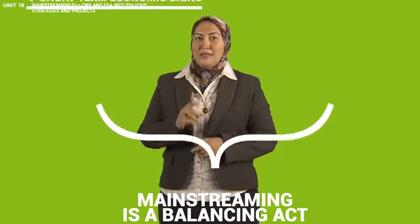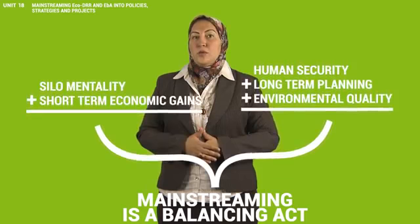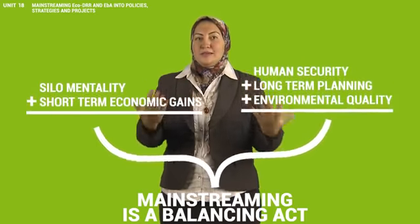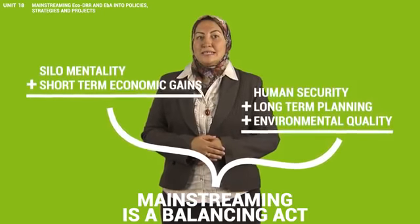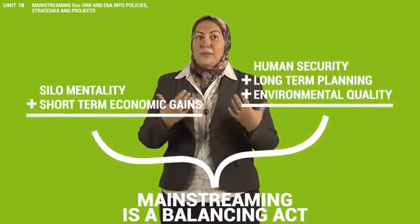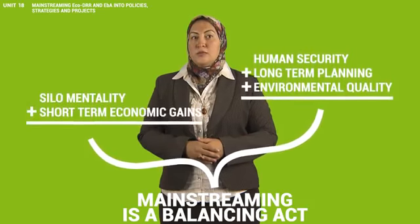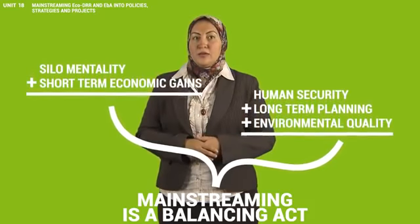To wrap up, mainstreaming ECODRR and EBA requires not only balancing between economic and environmental interests, but also between stakeholders' competing interests. These challenges are beyond the capacity of any group or institution to address single-handedly. Promoting effective participation by all stakeholders requires approaches that are multi-sectoral. Mainstreaming ECODRR and EBA in development should therefore be pursued at different levels, involving different actors and sectors. This concludes Unit 18. Please stay tuned for Unit 19 on operationalizing resilience, which will give hands-on experience and lots of information useful for your final assignment.